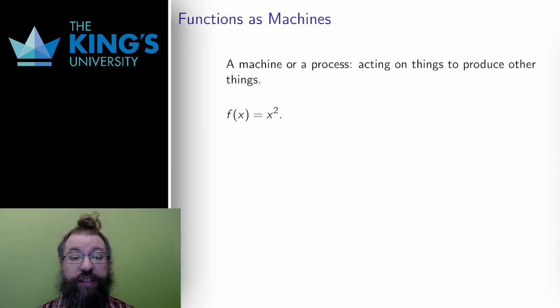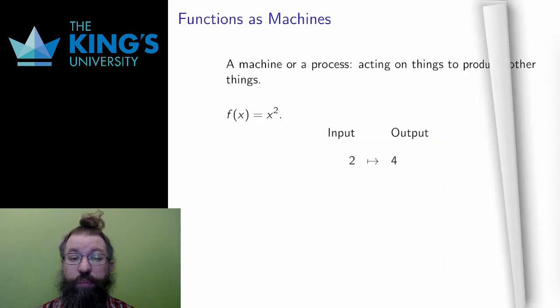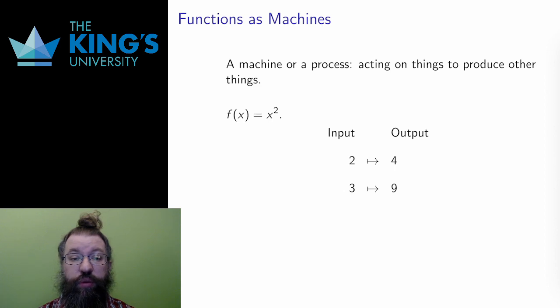Consider the function f of x equals x squared. What this function does is it squares numbers. It has an input and an output. For the input 2, it outputs 4, since 4 is the square of 2. For the input 3, it outputs 9, since 3 squared is 9.